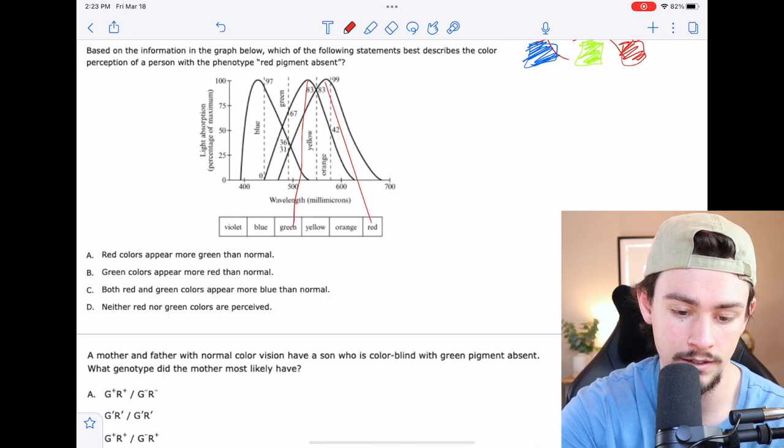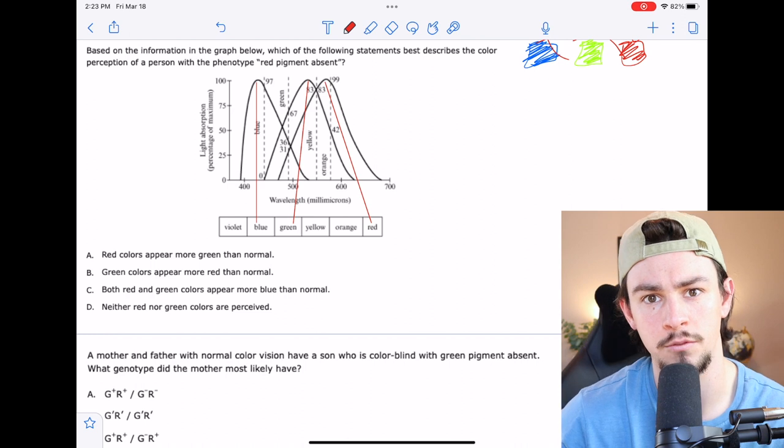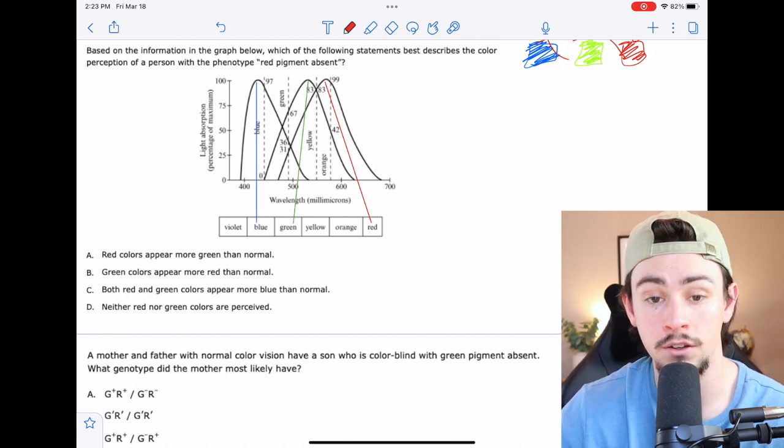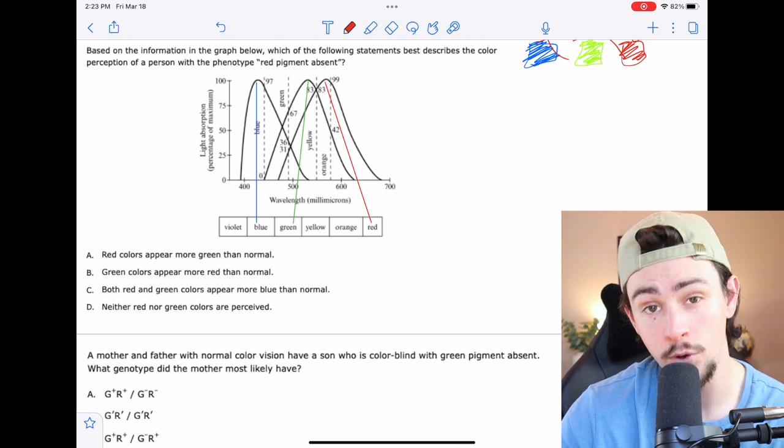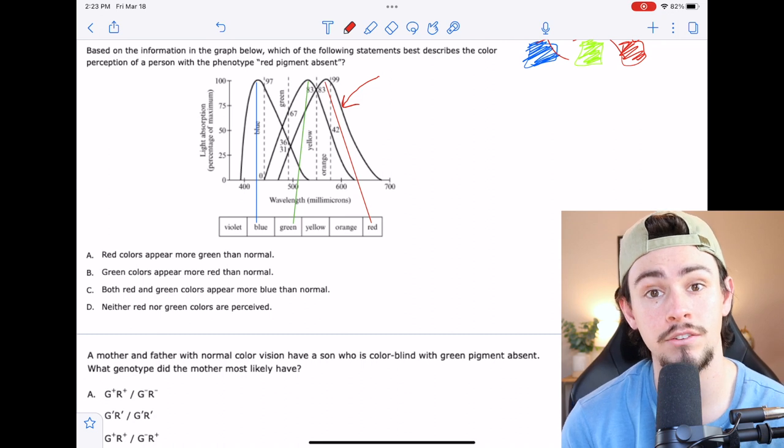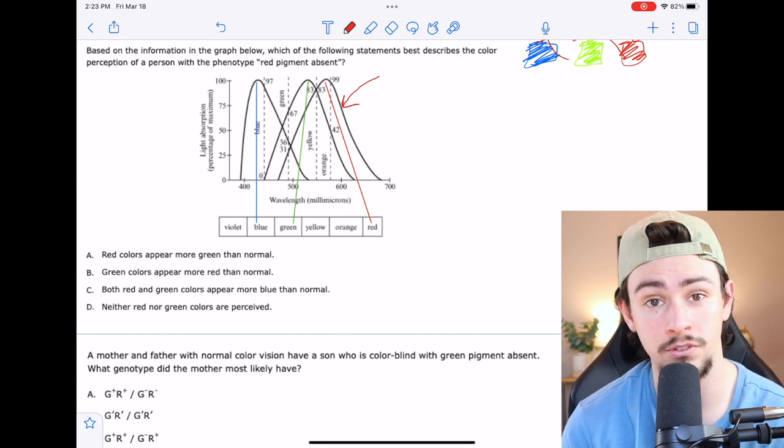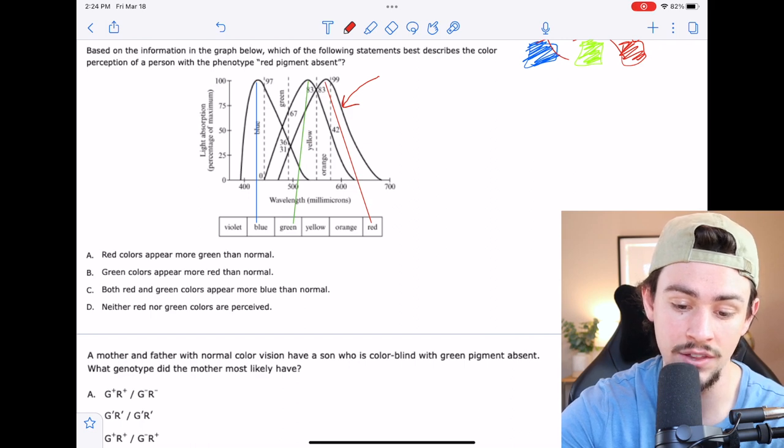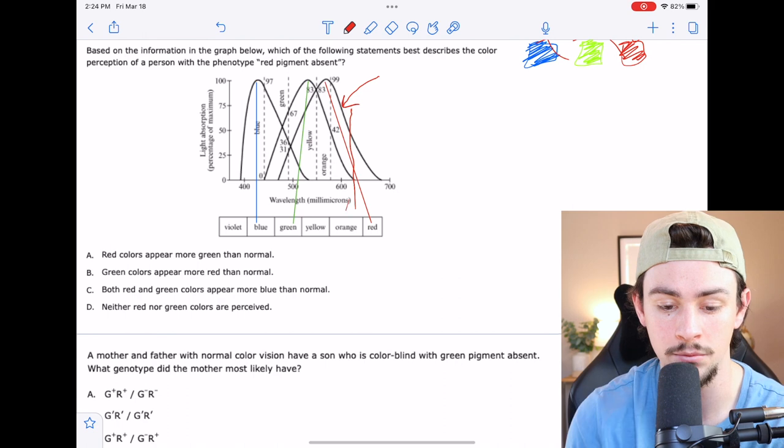Don't get the color of my pen confused with the specific pigment. Actually, I'll change it. The question stem is telling us that we're going to remove the red pigment, which is going to be this curve. And then they're saying, what is this person's visual perception going to be like? Well, they're going to have a complete deficit in anything to the right of this line because it doesn't have any overlap from other pigments.